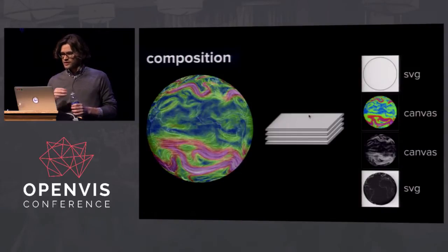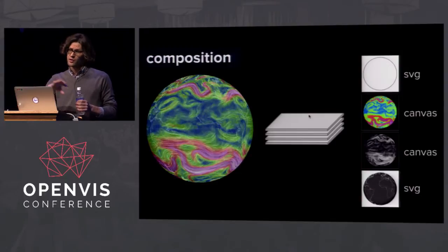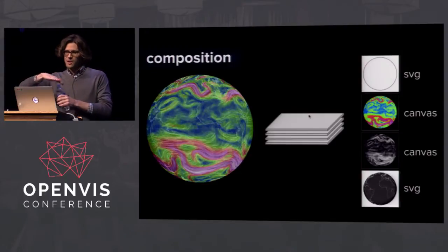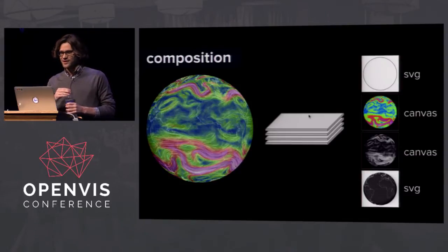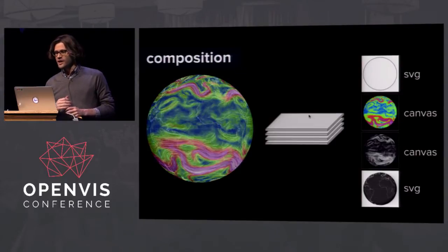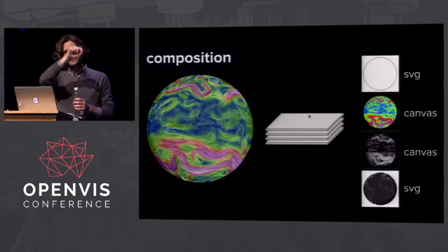The animation is composed of four layers. At the very bottom is an SVG layer using D3 and TopoJSON to draw the coastline. Sitting on top of that is an HTML5 canvas where all the particles are drawn using the technique we just looked at. On top of that is another canvas that encodes all the color information — either temperature or wind velocity. Finally, on top of that is another SVG layer — just a black circle — to clean up the edges and give it a nice anti-aliased look.